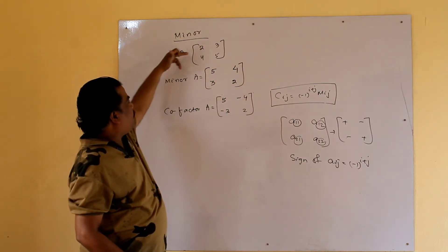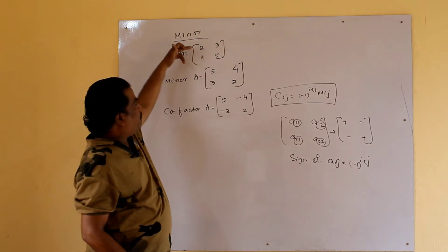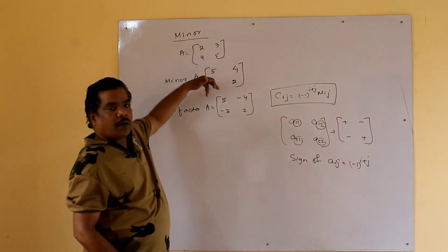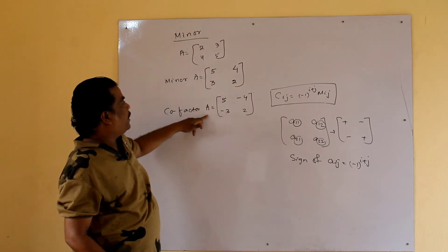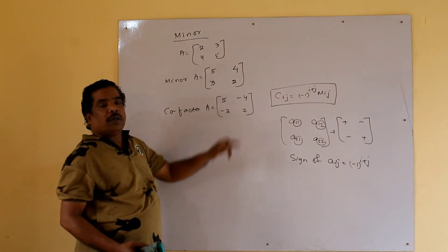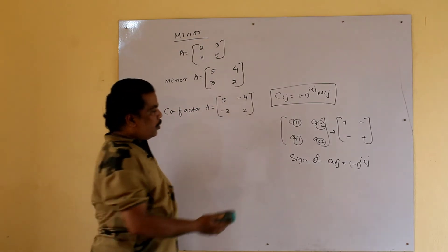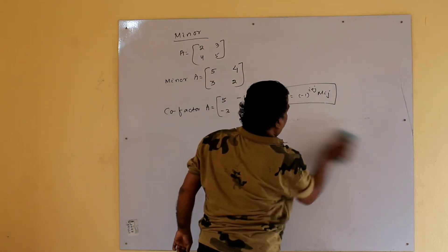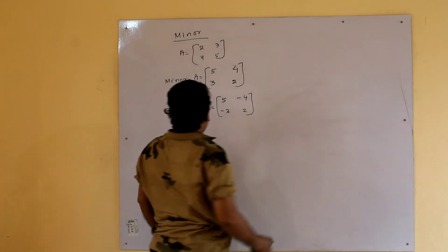So A = [2, 3; 4, 5]. The minor matrix is [5, 4; 3, 2]. Applying the sign pattern: co-factor of A is [5, -4; -3, 2]. Co-factor of element 2 is 5, co-factor of 3 is -4, co-factor of 4 is -3, and co-factor of 5 is 2.